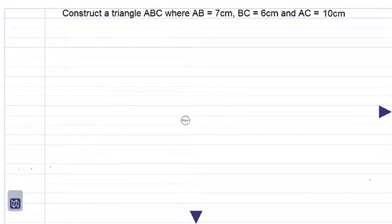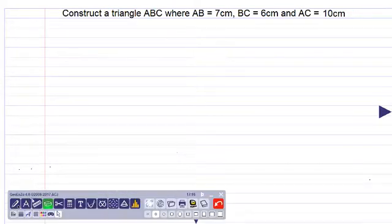Let us construct the scalene triangle. We are given the lengths of each side, so we start with our long ruler.